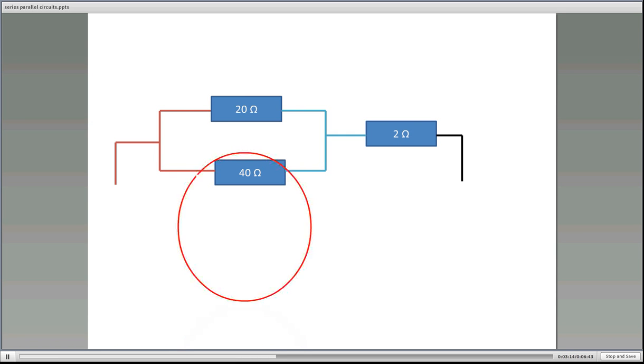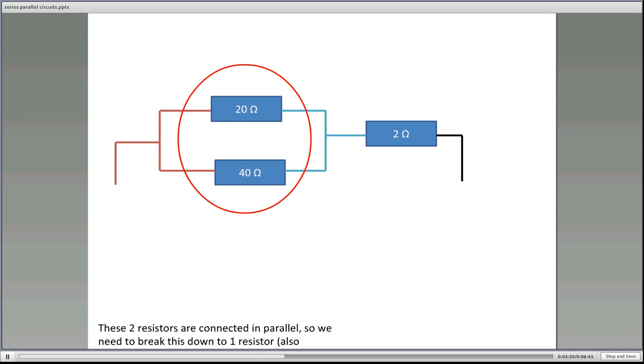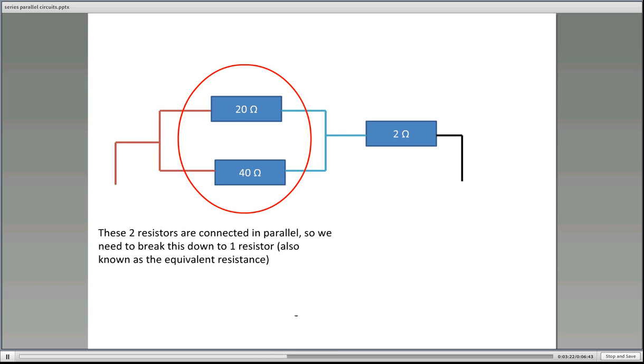So firstly, those two there are in parallel. If you remember from your parallel circuits, we used equations to work that out. So because there's two resistors in parallel, we need to break it down to one resistor, also known as the equivalent resistance. And just remember in a parallel circuit, the total resistance in a parallel branch is always smaller than the smallest value of resistance. So we should get a value less than 20 ohms. If we don't, we've made an error with our calculations.